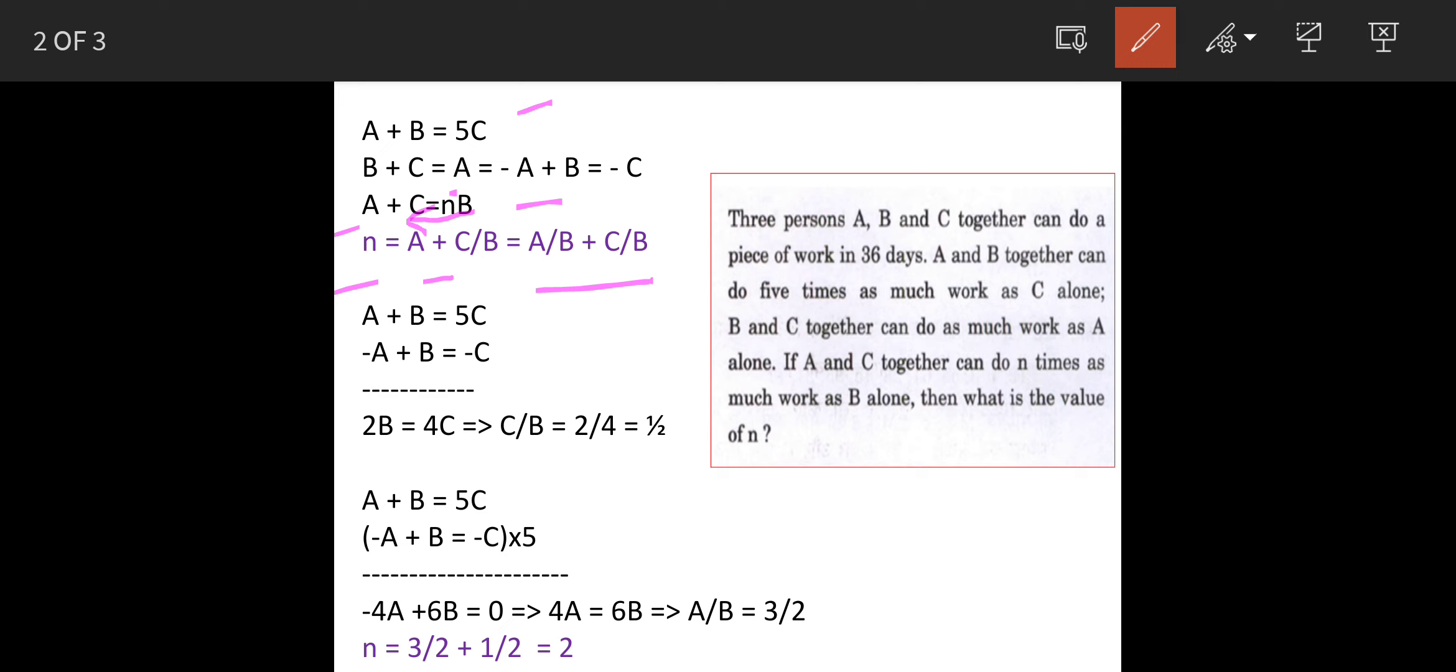Now there are 4 unknowns A, B, C and N, and equations are only 3. Now there is one more equation possible: A plus B plus C is equal to 36. You can use this information also, but we will keep our calculations to simple values.